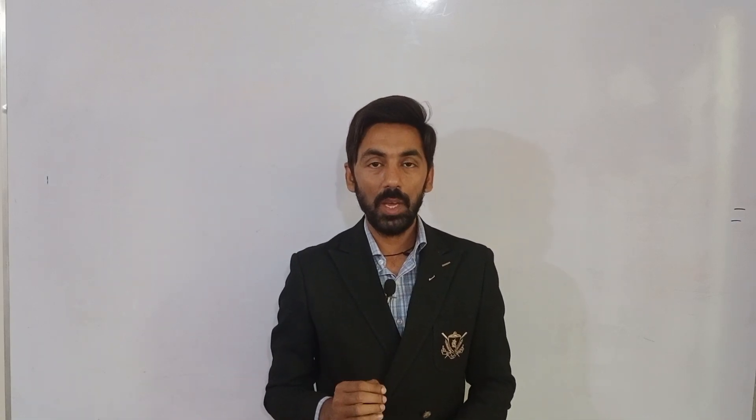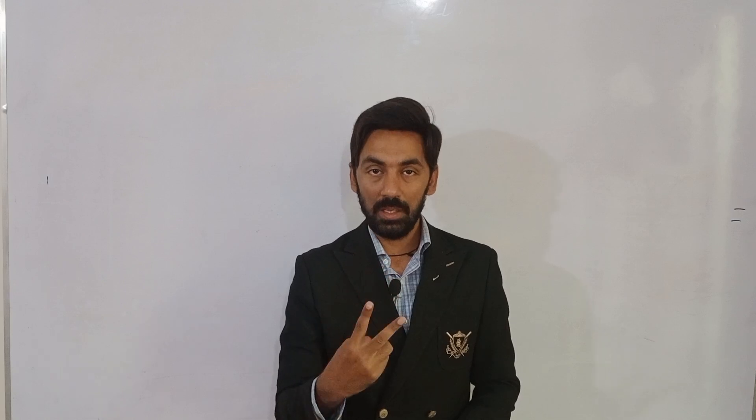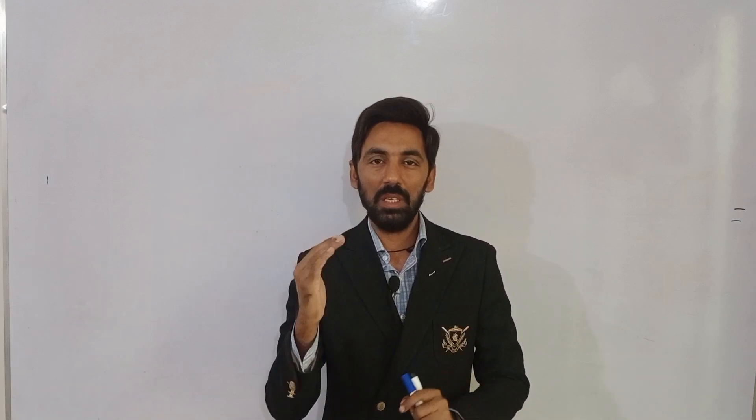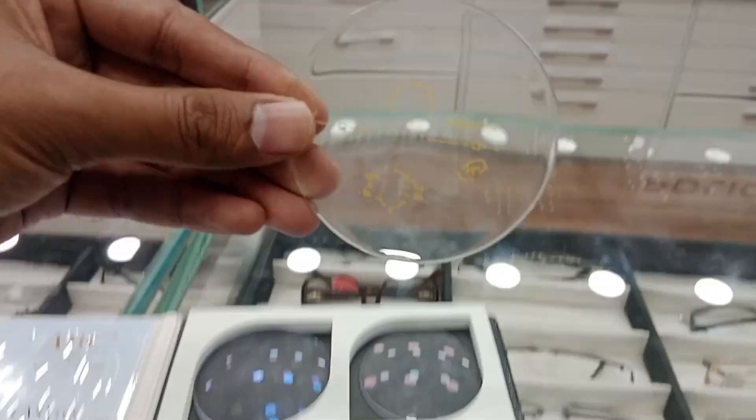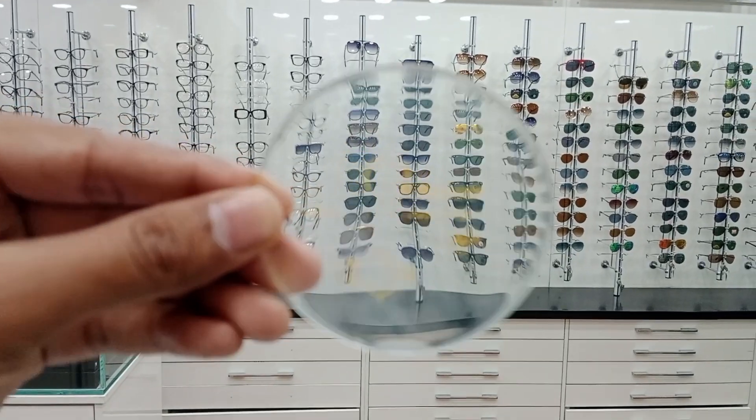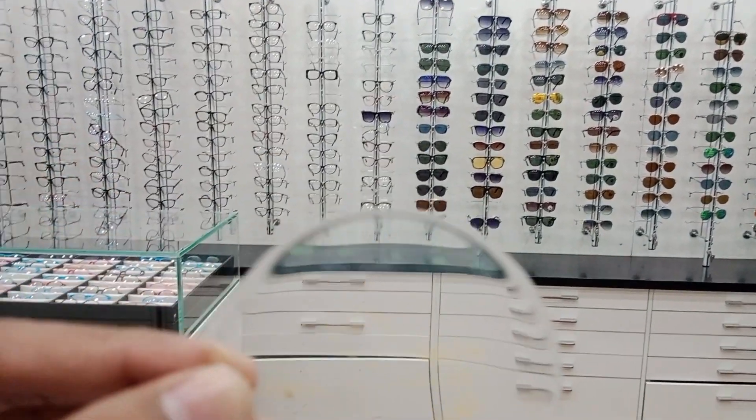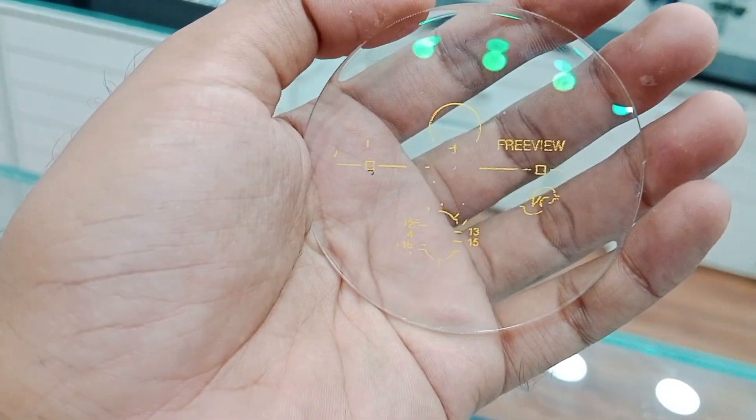In trifocals, we have three different sections — one for distance, intermediate, and near — and we have two distinct lines, which is a disturbance at its peak. That's why trifocals are obsolete. The most innovative option now is progressive addition lenses, where there is no distinct line, no separated line, no differentiated line. You can enjoy distance, intermediate, and reading — three distances in a single lens without any sharp borderline.